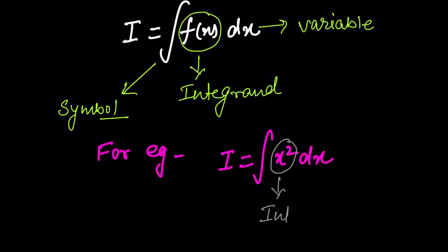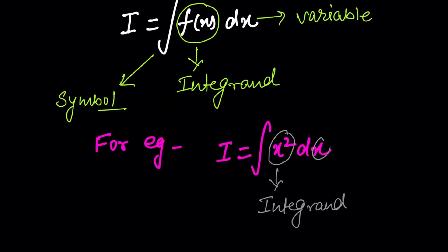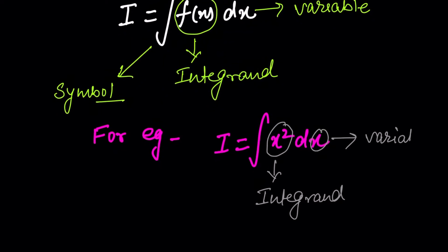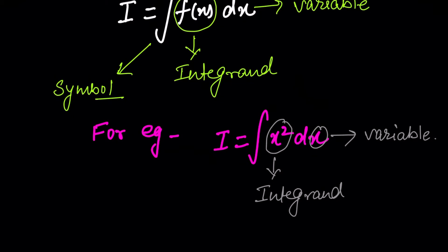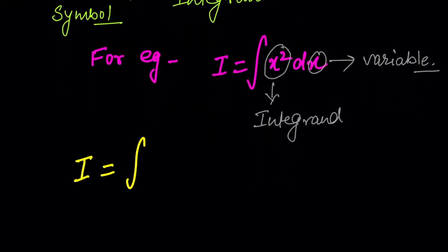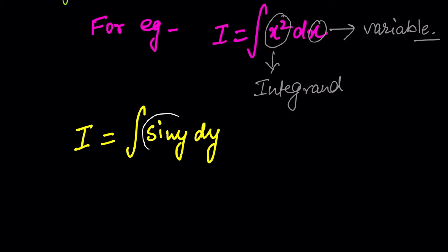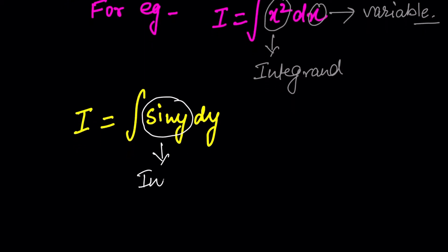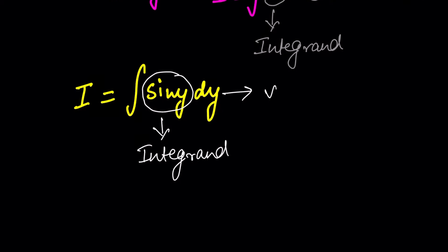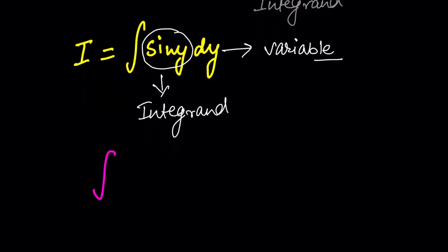For example, I = ∫x² dx — here x² is the integrand and x is the variable of integration. Second example: I = ∫sin(y) dy — here sin(y) is the integrand and y is our variable of integration.